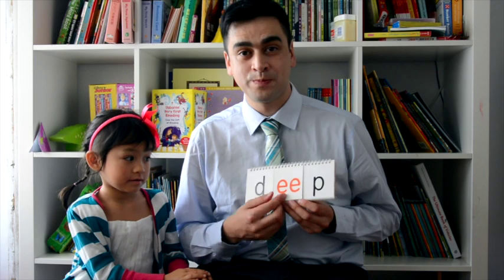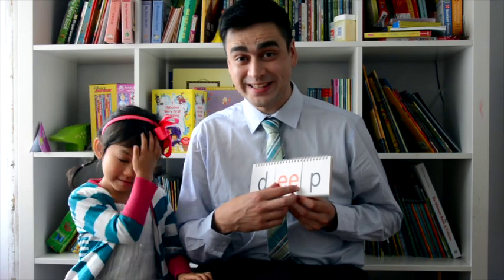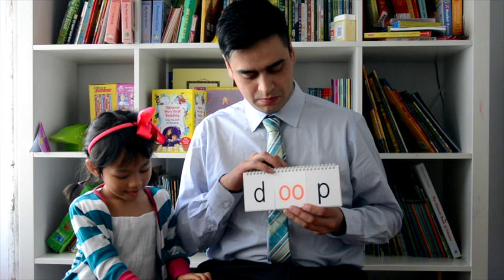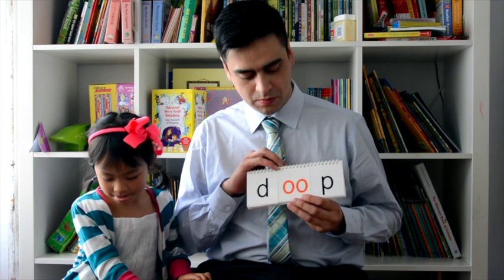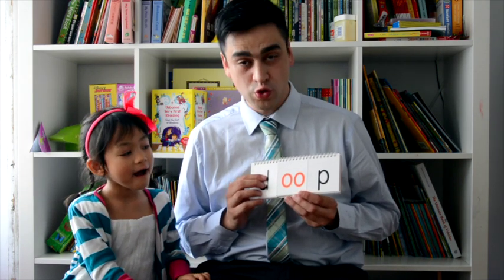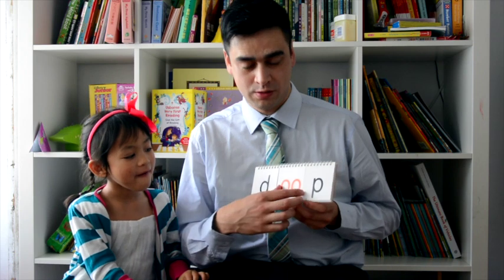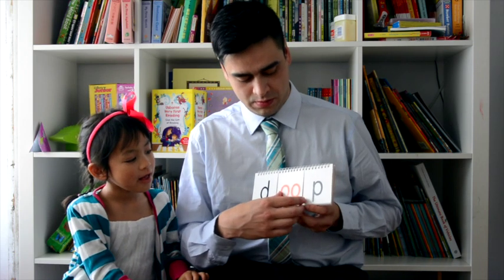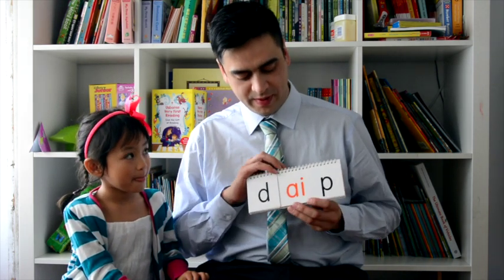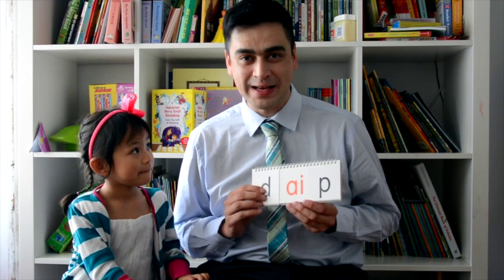EE, which makes the sound EE. OO, which makes the sound OOO and UH. And AI, which makes the sound A.